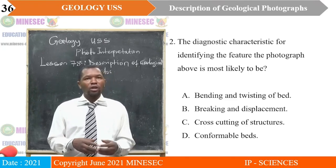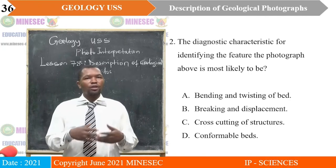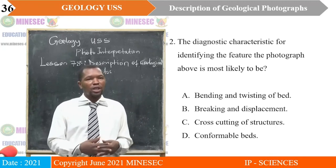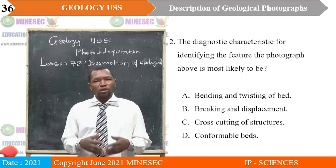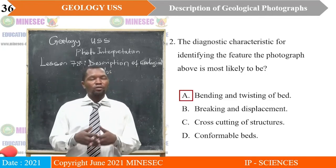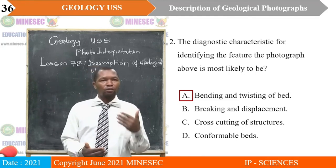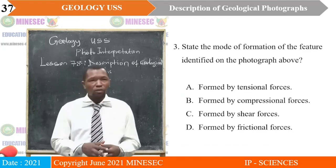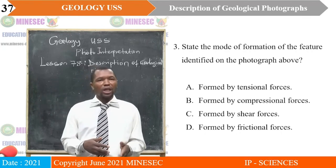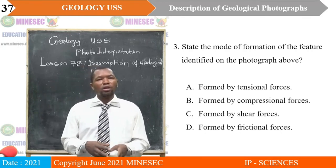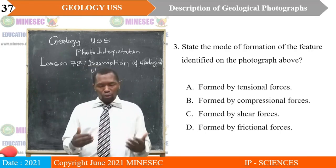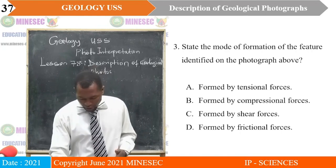The correct answer is A — bending and twisting of beds. The best way to identify folds, both in the photo and in the field, is by basing attention on bending and twisting of beds. Question two: state the mode of formation of the feature identified on the photograph above. A. Formed by tensional forces, B. Formed by compressional forces, C. Formed by shear forces, D. Formed by frictional forces. The correct answer is B — formed by compressional forces, since bending and twisting is related to compressional forces.